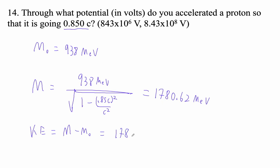So I'm going 1780.62 minus 938. I get that it's 842.62 million electron volts of kinetic energy.